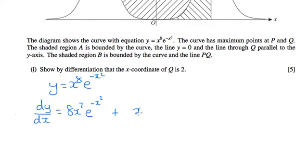So x^8 gets left alone, and then we times by the differential of e^(-x^2). When we differentiate e^(-x^2), we're going to get e^(-x^2), but we're also going to need to times by the differential of the power, and the differential of the power is -2x.